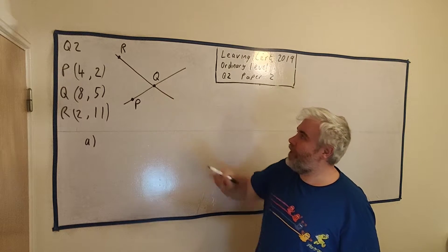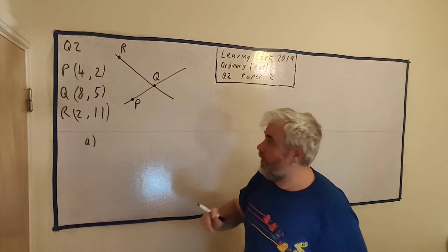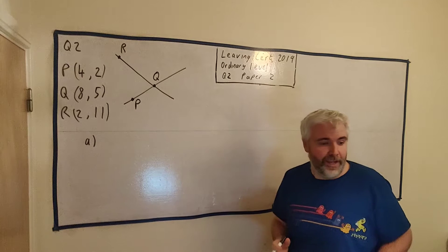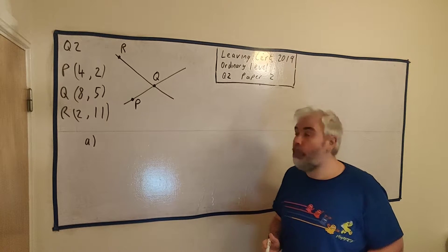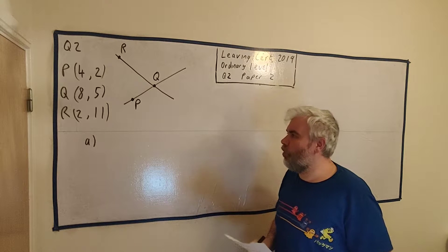On the board I've drawn the picture they've given us. It's two lines with three points. We have P, Q, and R here. Here are all the points and the coordinates they've given us. They ask us to find the slope of P and Q.